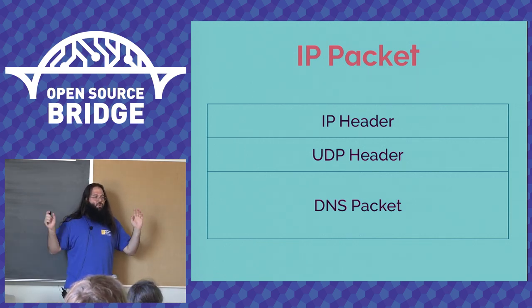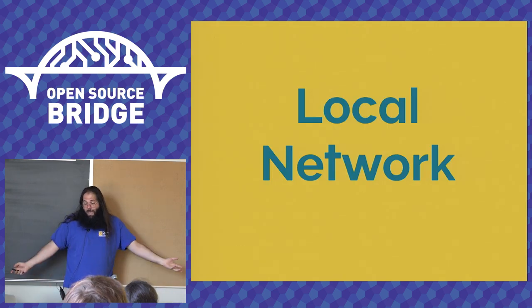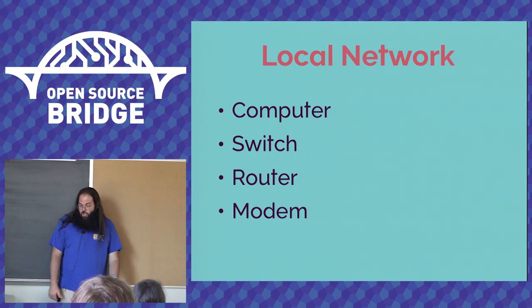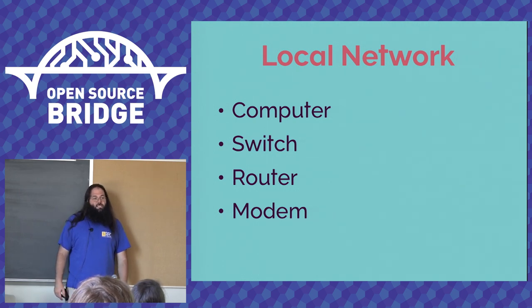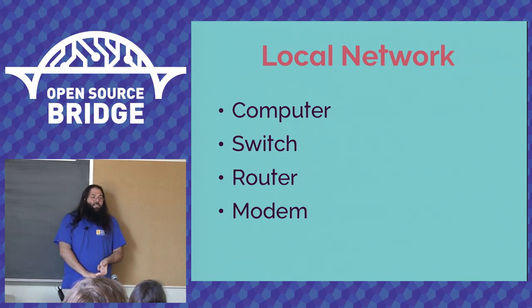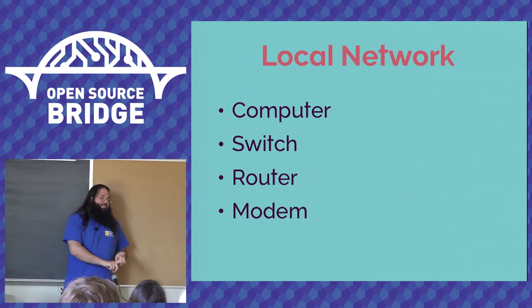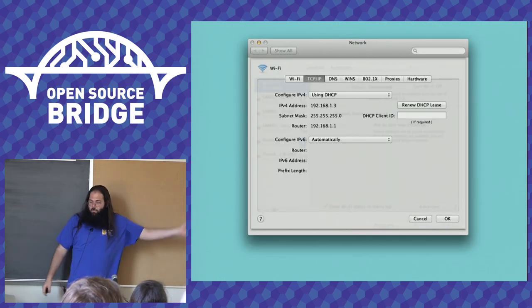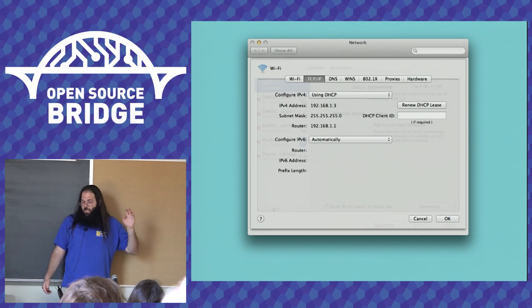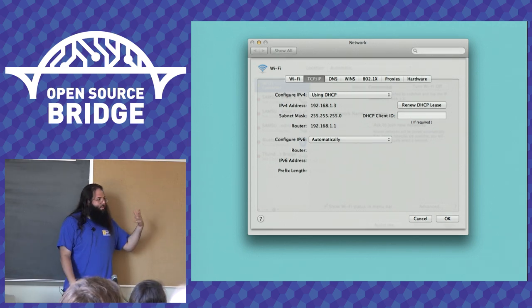We have an IP packet ready to send. We're going to look at a very simple local network: one computer connected via wired network to a switch, the switch connected to a router, and the router connected to a cable or DSL modem. In a modern home, the switch, router, and modem are often in a single physical box, but their functions are still discrete. Most of us have seen a network configuration with an IP address and a subnet mask handed out by a router acting as a DHCP server. The IP address determines who we are on the network, while the subnet mask and default gateway are used to build a route table.